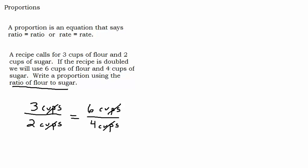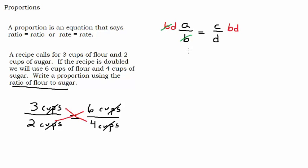Another property you'll use a lot when solving is the cross product. If I multiply these two diagonal terms together and those two diagonal terms together, they should be equal: two times six is twelve, and three times four is twelve. That tells us the fractions are equal. But why does the cross product work? If we have a proportion — a over b equals c over d — we can multiply both sides by b times d, which is legal since you can multiply both sides of an equation by whatever you want.